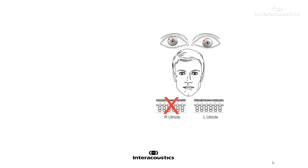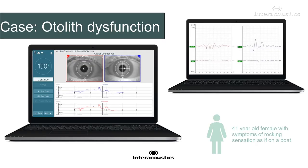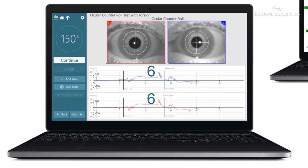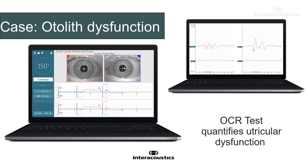In a patient with a unilateral otolith lesion, in the upright head position, the patient will have static torsion of the eyes toward the side of lesion and skew deviation, as if the head was tilted contralateral to the side of lesion. In addition, the ocular tilt response becomes asymmetrical with smaller responses for head tilts toward the side of lesion. Here you see the ocular counter roll test results in a patient with otolith dysfunction. The OVAMPs show smaller responses for the right side compared to the left side. The OCR responses for the left head tilt are larger than those of the right head tilt. This asymmetry is consistent with the OVAMP results and signifies a right utricular abnormality.